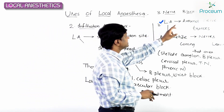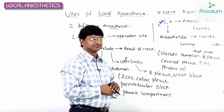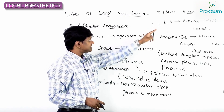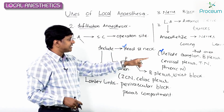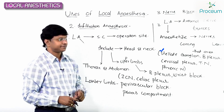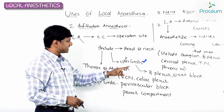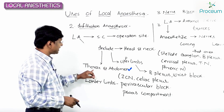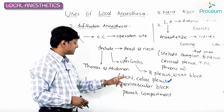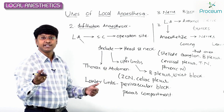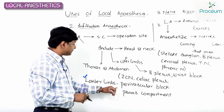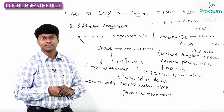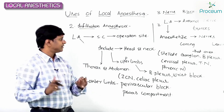In summary, in nerve blocks the local anesthetic is injected around the nerve trunk to anesthetize nerves coming to and leaving from that area. In the head and neck it blocks the stellate ganglion, cervical plexus, trigeminal nerve, and phrenic nerve. In the upper limbs it blocks the brachial plexus and wrist. In the thorax and abdomen it blocks the intercostal nerve and celiac plexus. In the lower limbs it causes the perivascular block and psoas compartment block.